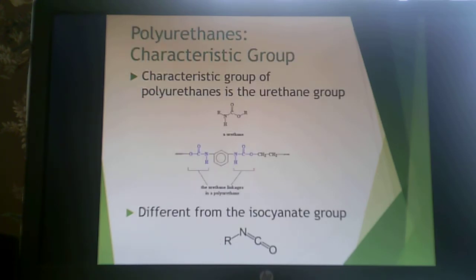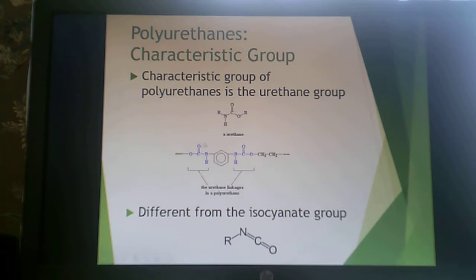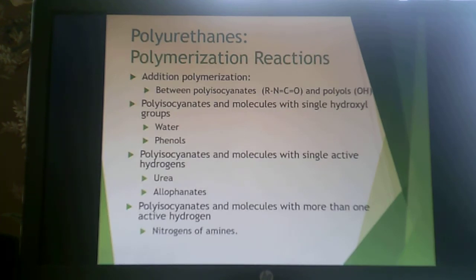The characteristic group of a polyurethane is the urethane group — a urethane linkage. It looks very similar to an amide linkage, but there's an extra oxygen after the carbonyl; in an amide that position goes to an R group, whereas here it goes to an oxygen. An isocyanate group is what you react to create that urethane linkage, but the isocyanate itself is not a urethane. Making a urethane involves addition polymerization between a polyisocyanate (NCO group) and a polyol (OH groups).